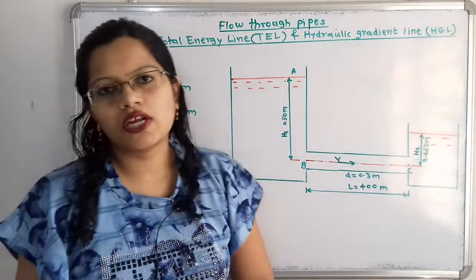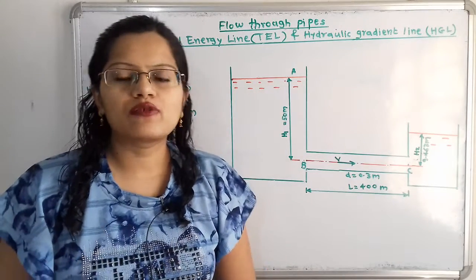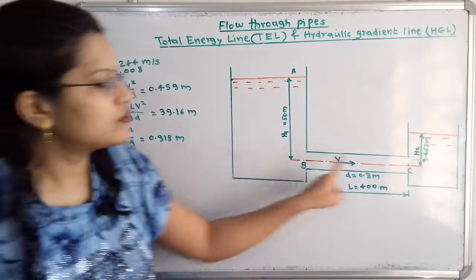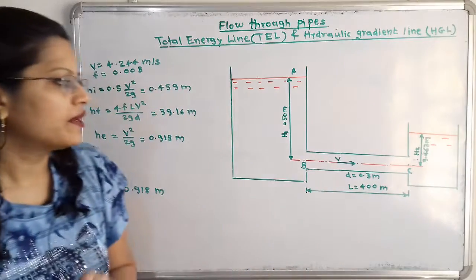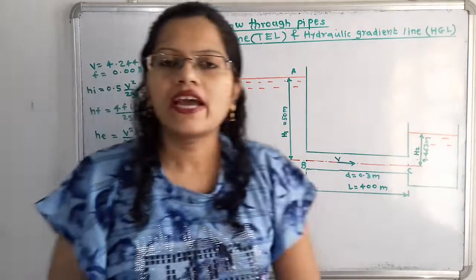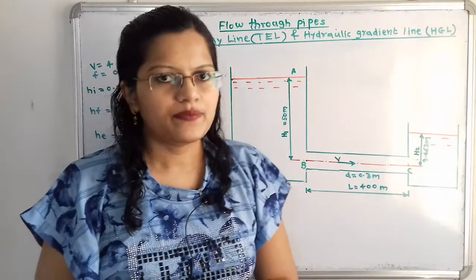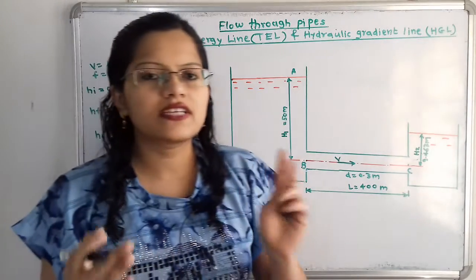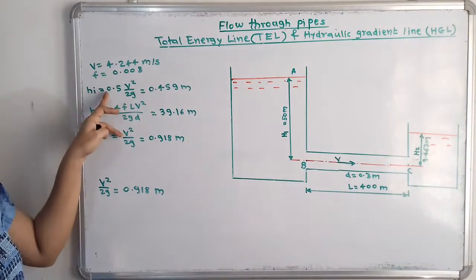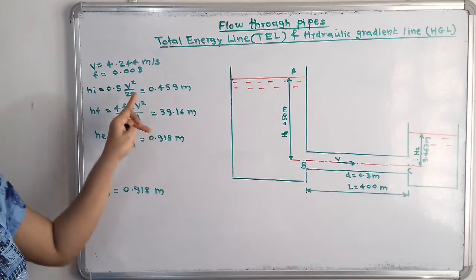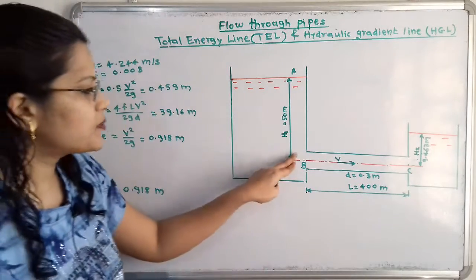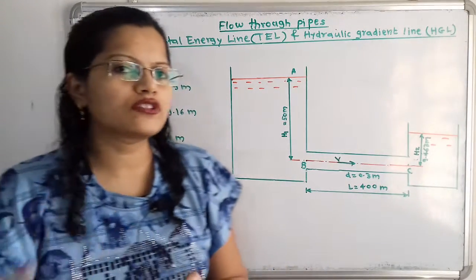To plot the total energy line, we first calculate the head losses as water flows from tank 1 to tank 2 through the pipe. When water enters the pipe from the tank, there is a head loss at the entrance at point B. The entrance head loss HI is equal to 0.5 × V² / 2g, which equals 0.459 meters.